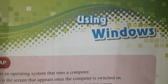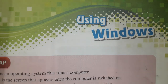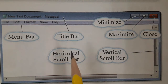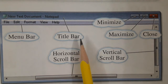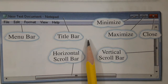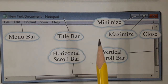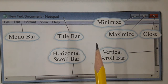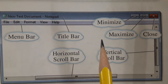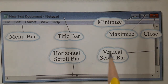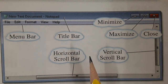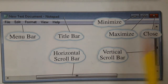Look at the picture of these components — these are the components of a window. Every software program opens in a window. The contents of every window are different, but most windows have some basic parts. Let's learn about the basic parts of a window.